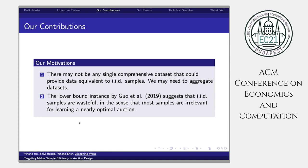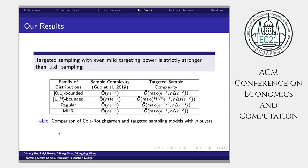Our results are summarized in the following table. We study four families of distributions: 0-1-bounded, H-bounded, regular, and MHR distributions. MHR is Monotone Hazard Rate Distribution. Targeted sampling with even mild targeting power is strictly stronger than IID sampling as shown in our table.